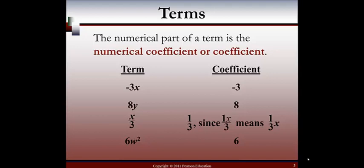If you only have a variable on top, then you can pull it out to the side and put a 1 on top instead, just like this case shows you. Our last example is 6w to the second power. We're looking for just the numerical coefficient, and that would be our 6.